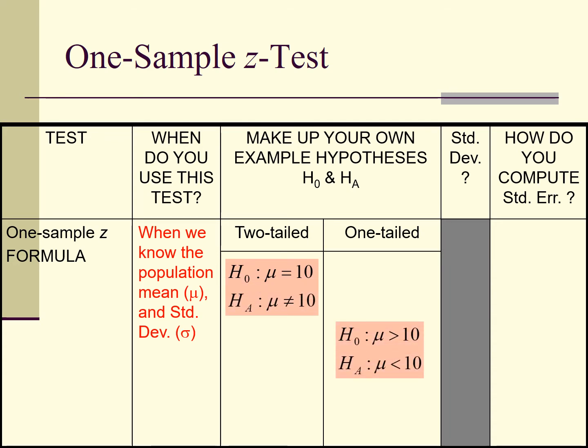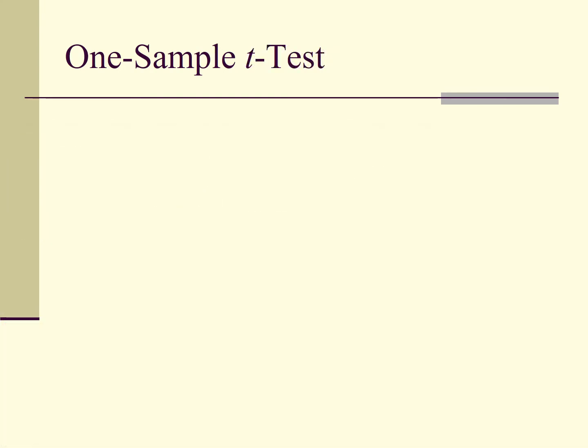So how to determine the hypothesis? How to compute the standard error? How to compute the observed score? This is for one sample t-test.